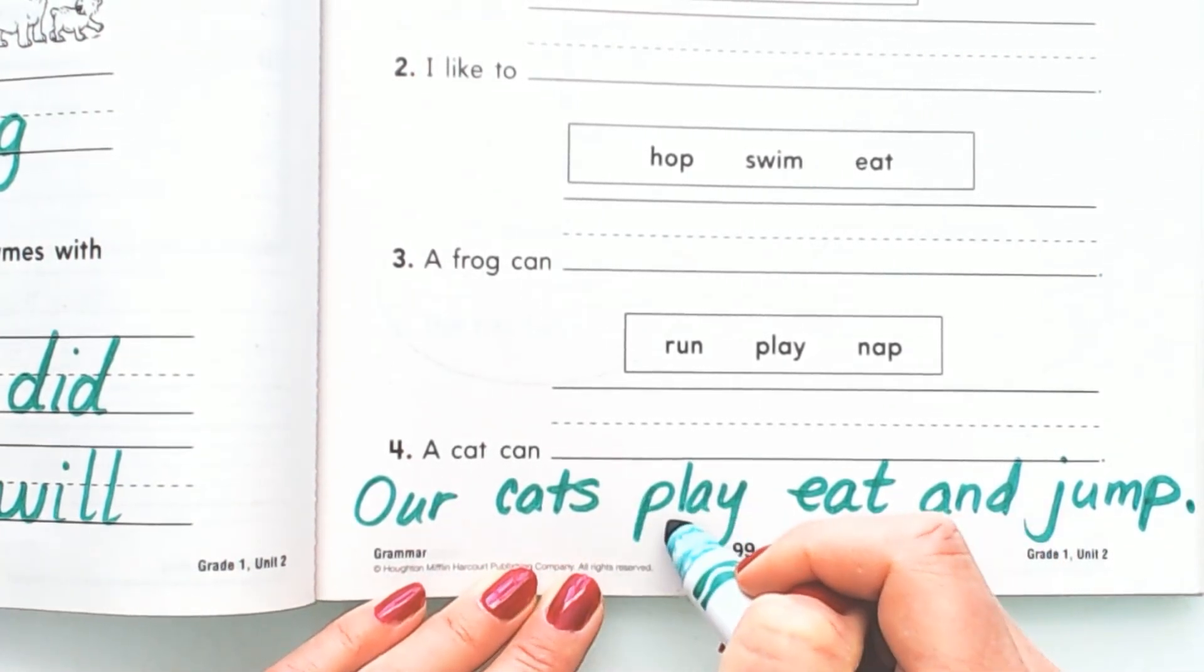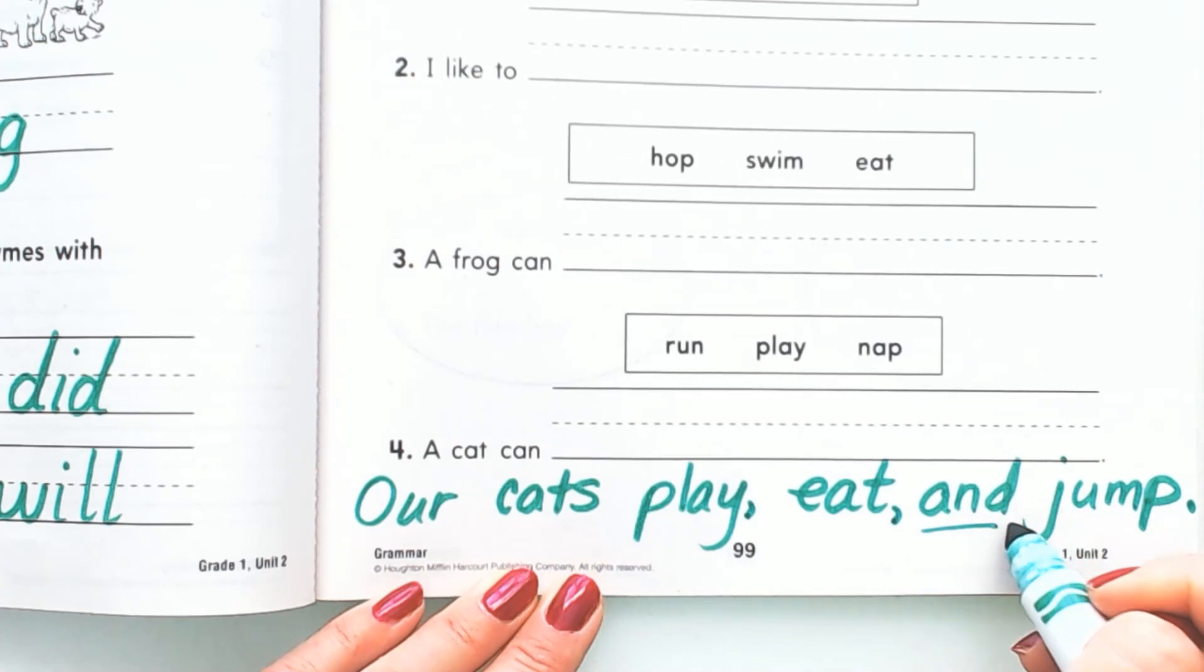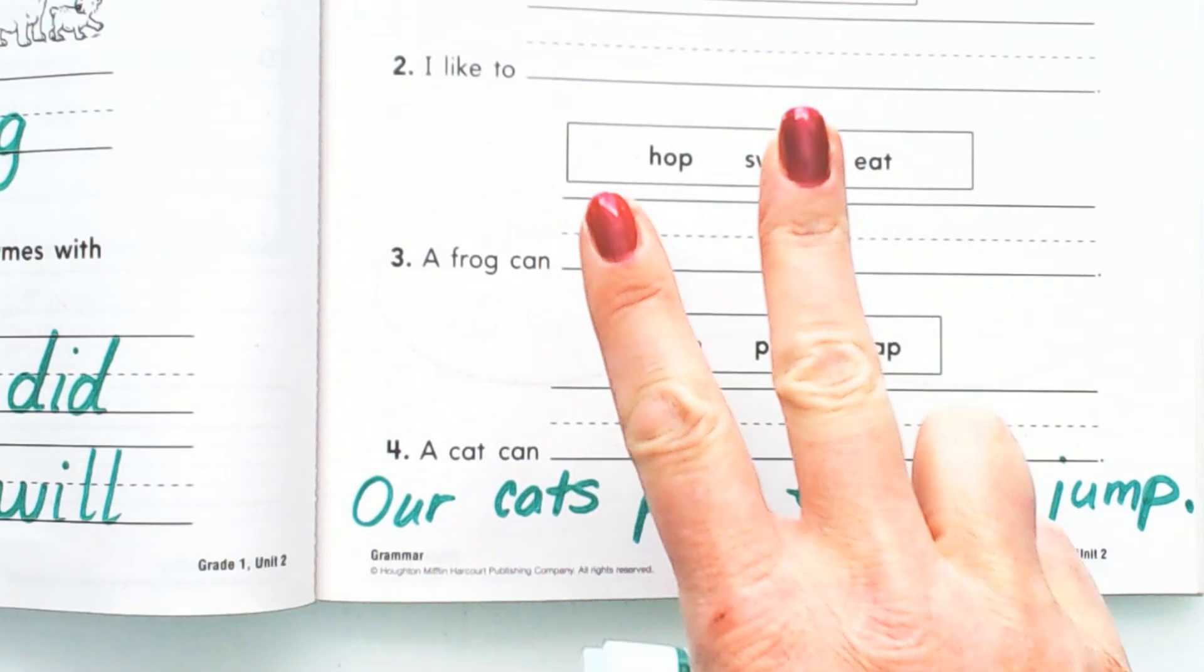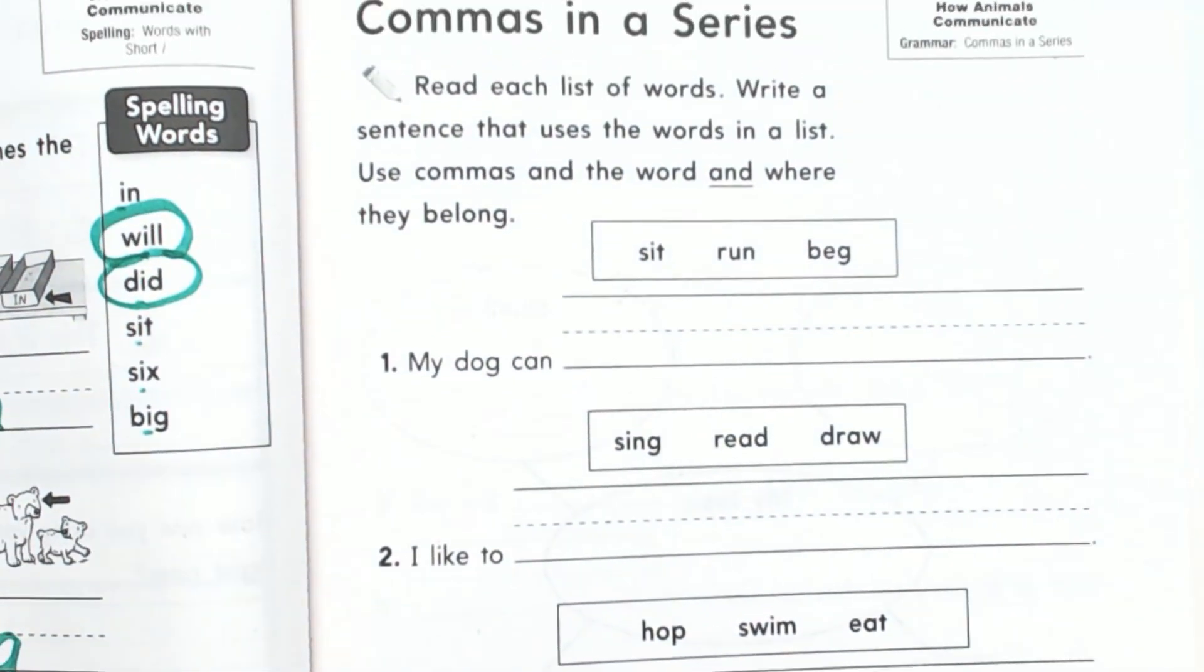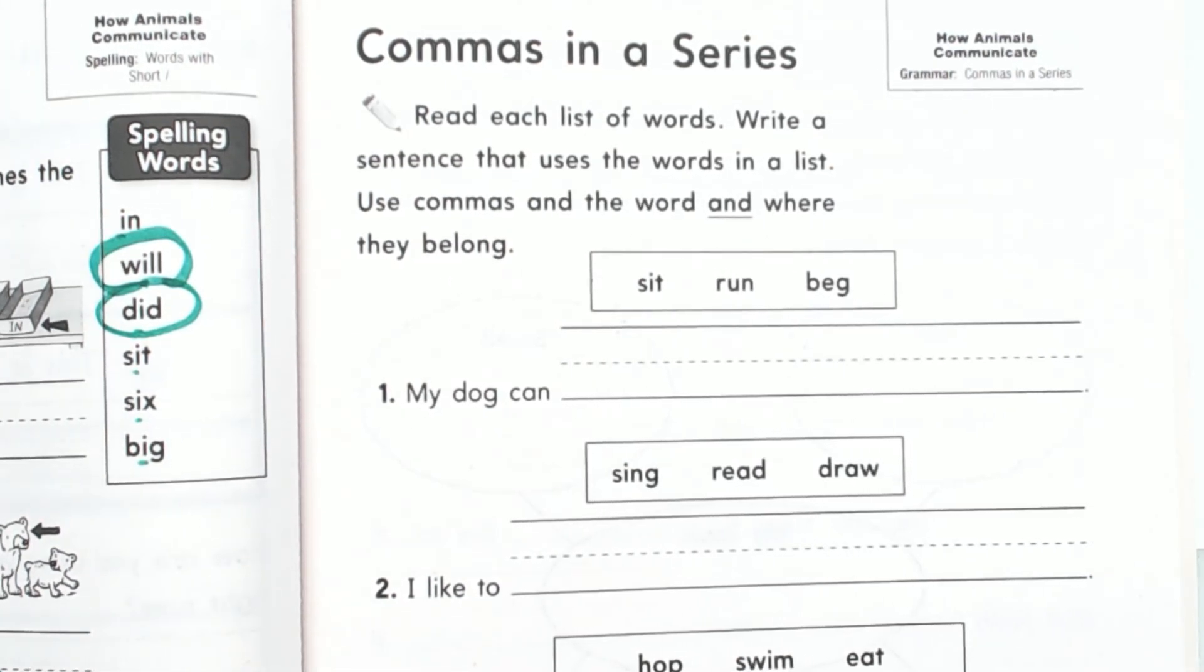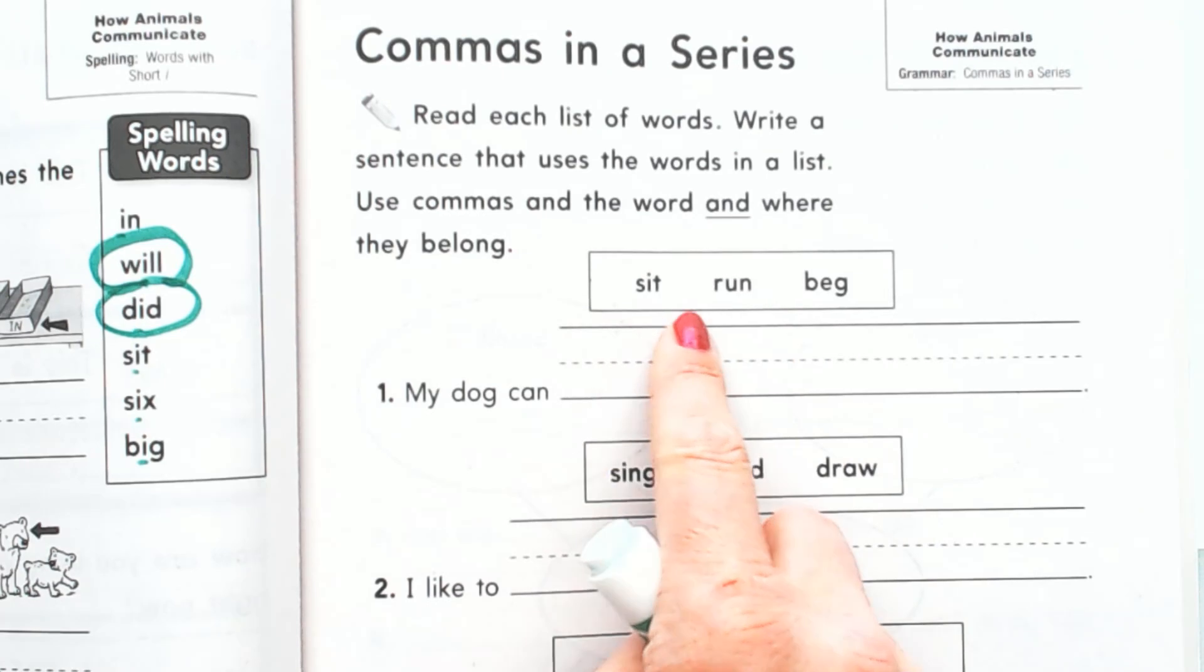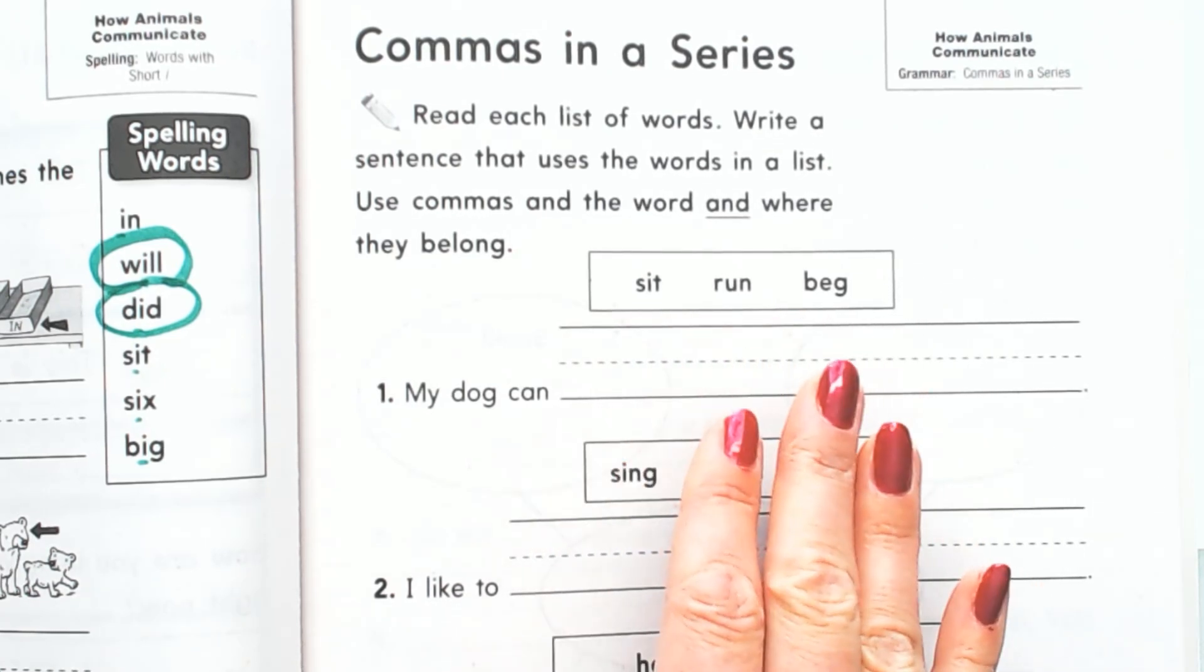So our cats play, that's the first word in the list. For three words in a series we only need two commas and the word 'and.' So we're going to just do this. This is not something you can ordinarily do independently, so it's a good thing Mrs. Gillum is helping you. We're going to read the list of words and write a sentence that uses these words and put the commas and the word 'and' where they belong.